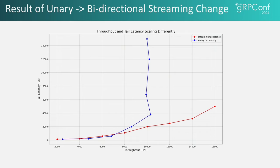The transition from unary to bidirectional streaming resulted in significant performance improvements. Unlike the unary model where latency spikes as throughput plateaus, the bidirectional streaming model continues to scale effectively. The results indicate that the bidirectional streaming model is better equipped to handle higher throughput without compromising latency, likely due to its ability to mitigate resource contention and thrashing.